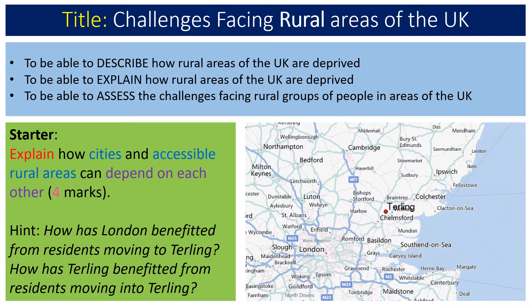Now we've already looked at one area in the UK. We looked at Turling last week. Turling is a rural area just northeast of London. We looked at its location in relation to Chelmsford and also some of the main routes into London. We also started to think about how accessible rural areas and cities depend on one another. What I'd like you to do is think about this question again, jot down some of your ideas, and then we'll go through together what you should have in your answer.